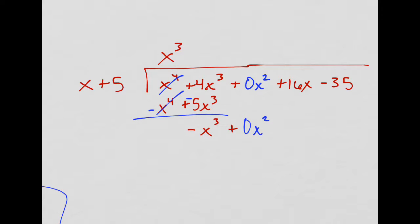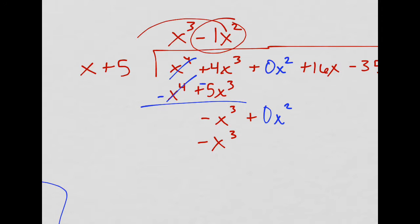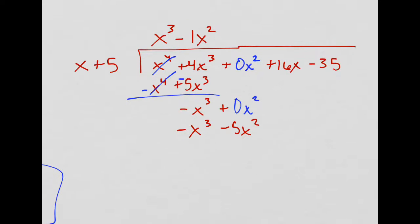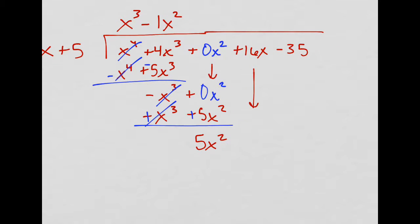Okay. So, how do I get what times x gives me negative x cubed? Well, that's just negative 1x squared. There we go. Negative x cubed. Negative 1x squared times 5. That's just negative 5x squared. Jeez, this is taking forever. Change the sign to subtract. That goes away. And we just have 5x squared. I will bring down plus 16x. Whew.